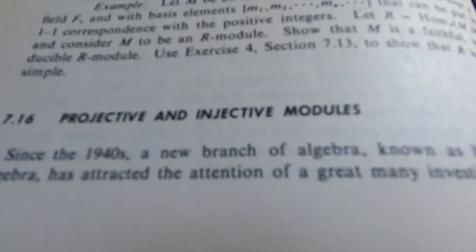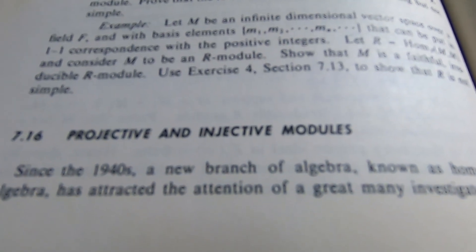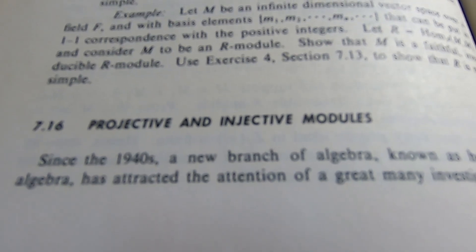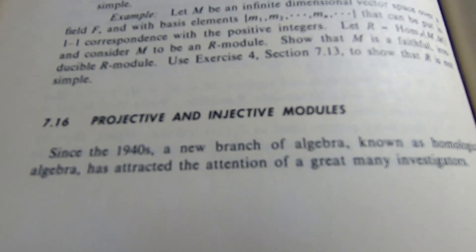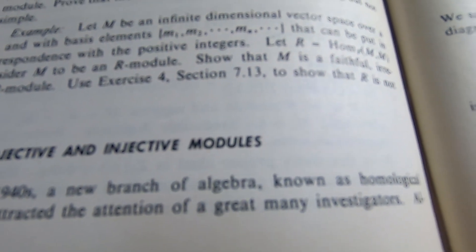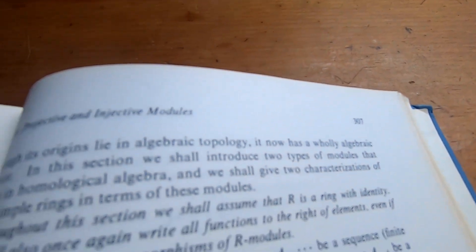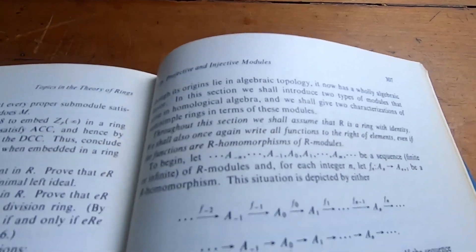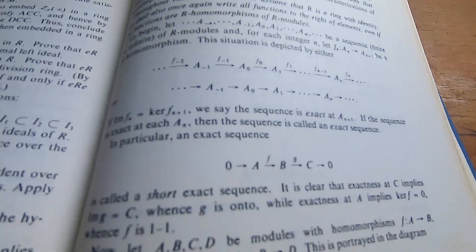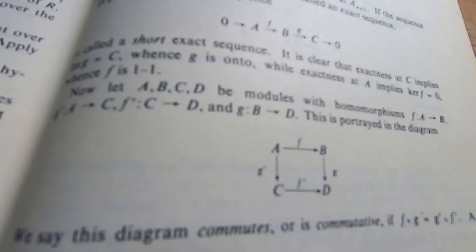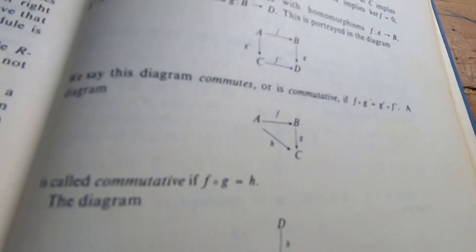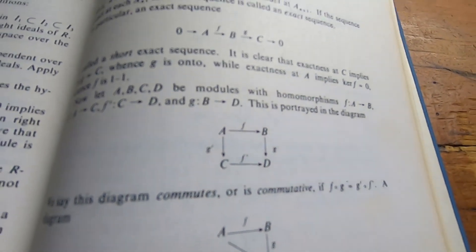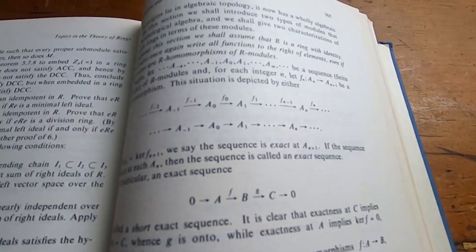Here's another example of something you typically don't find in basic intro books. Projective and injective modules. Since the 1940s, a new branch of algebra, known as homological algebra, has attracted the attention of a great many investigators. So, though its origins lie in algebraic topology, et cetera. So, it goes on, and it discusses some of this stuff, and I'm sure you've seen these diagrams in many books. You see stuff like this in more advanced books. But it also appears in this book, and I believe this is an introductory book, which just happens to contain a lot more advanced mathematics as well.